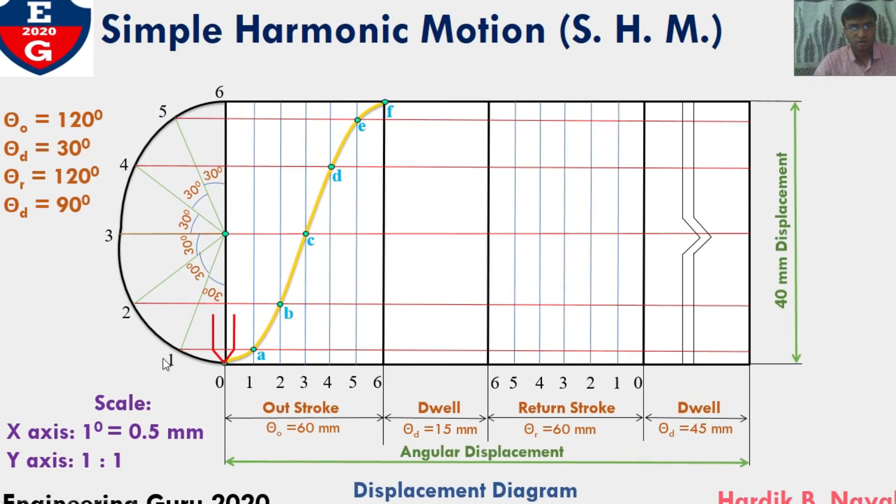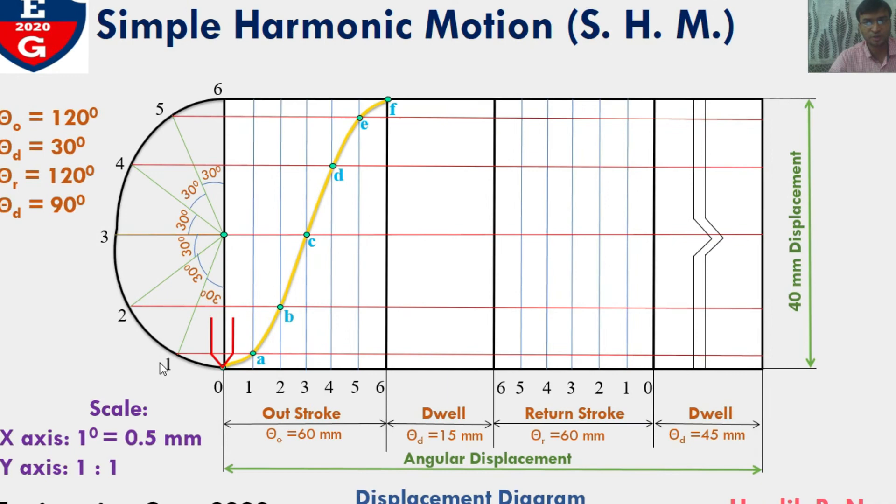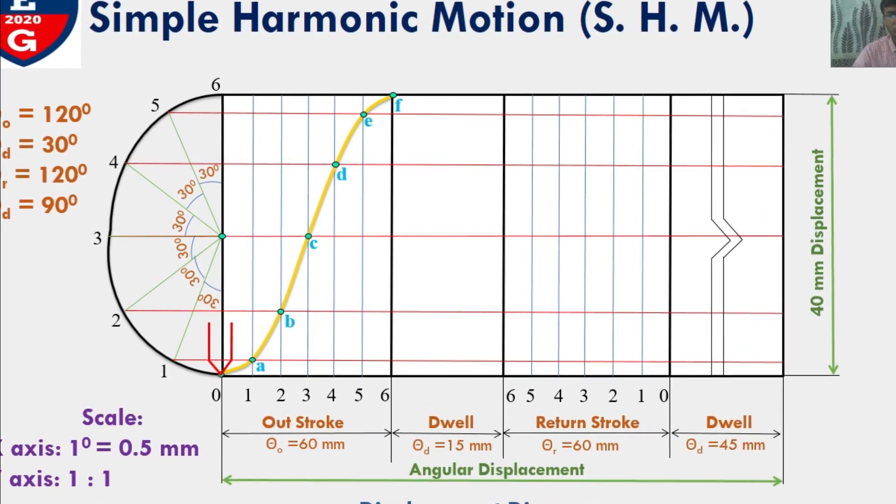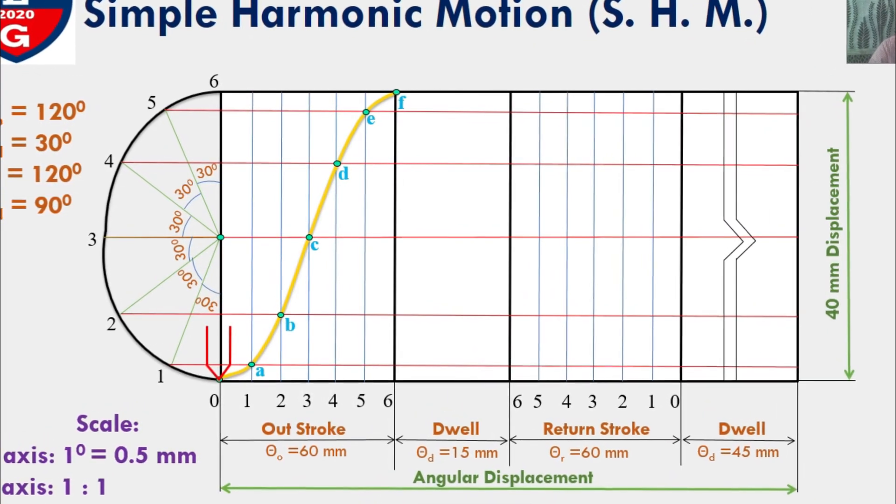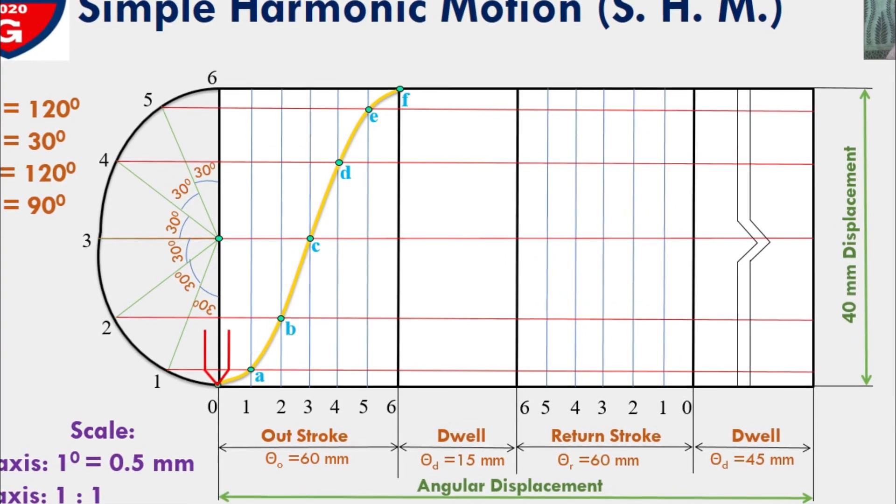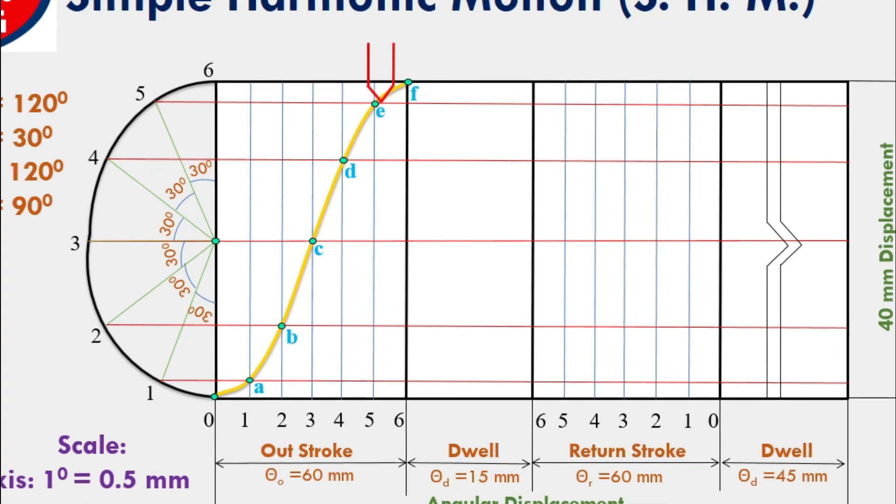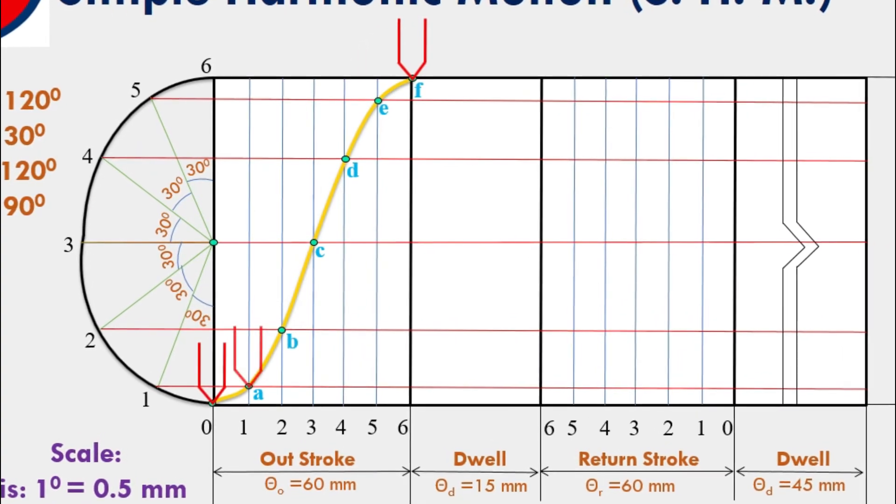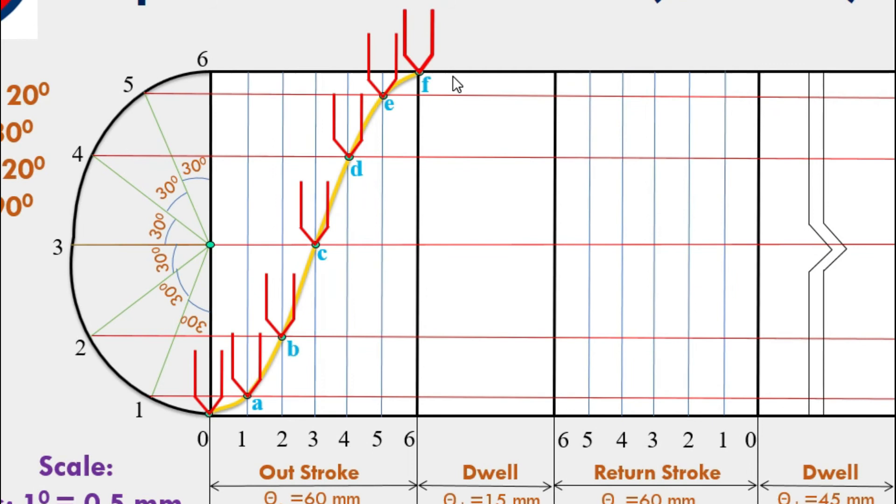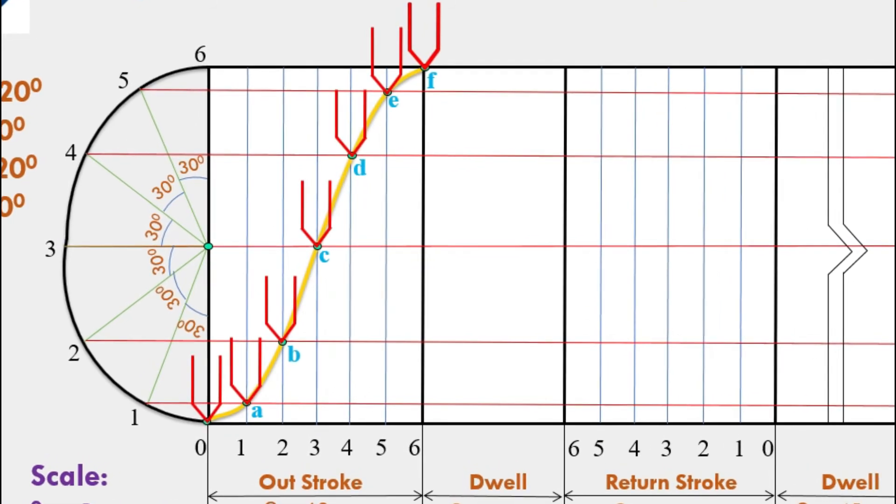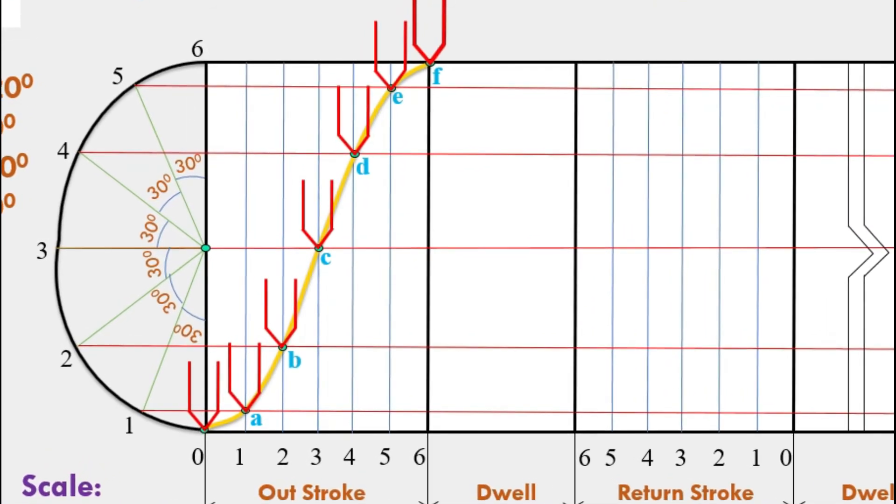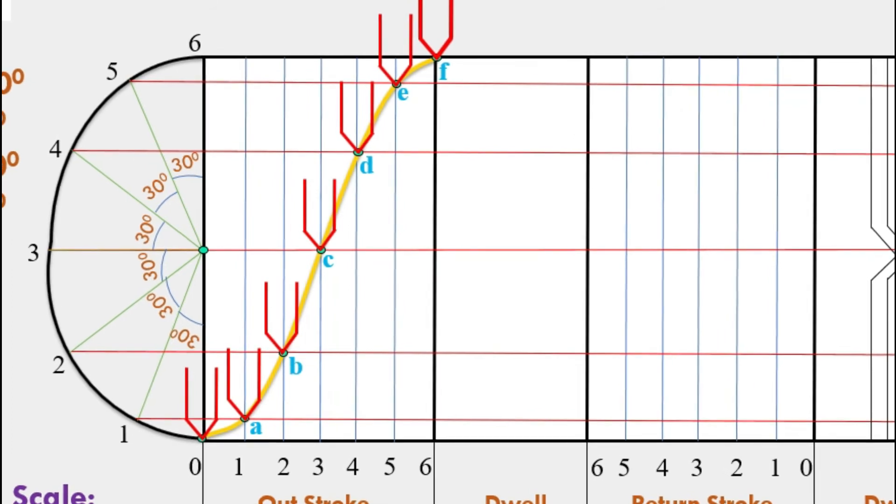At first, follower is at 0 position. Then it takes position at A, then B, C, D, E, and F. Finally, it will be reaching at maximum height in this way. This point shows increasing order of the follower when cam rotates.